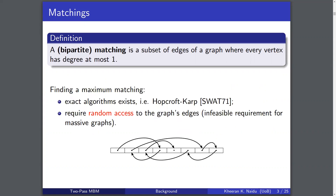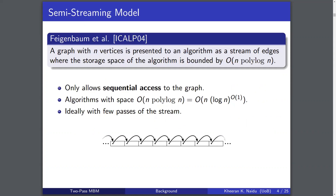Finding a maximum matching is a well-studied problem, and exact algorithms do exist. However, all of them require random access to the edges of the graph, and this is in fact an infeasible requirement, especially when dealing with massive graphs. This problem is solved with the semi-streaming model of computation.